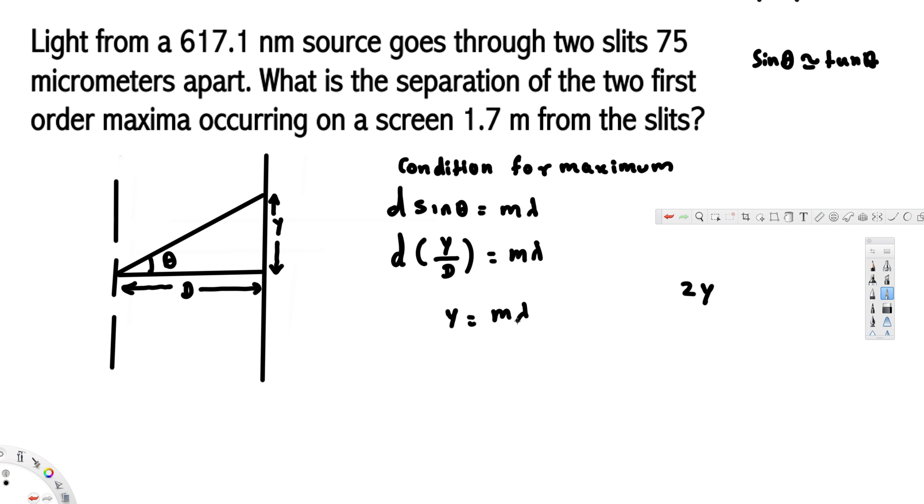Now let's look at the given information. We have λ provided, and we have first order, so m = 1. The distance D is 1.7 meters, and the slit separation d is 75 micrometers.